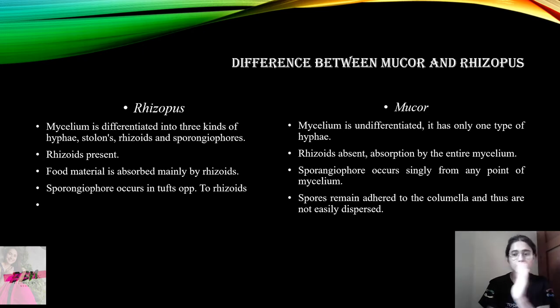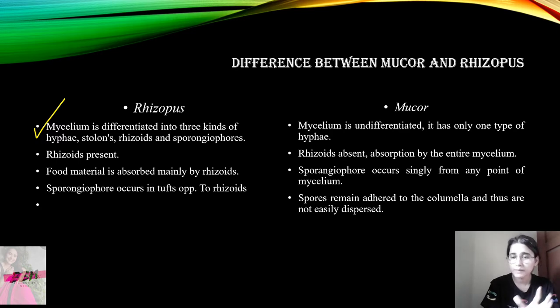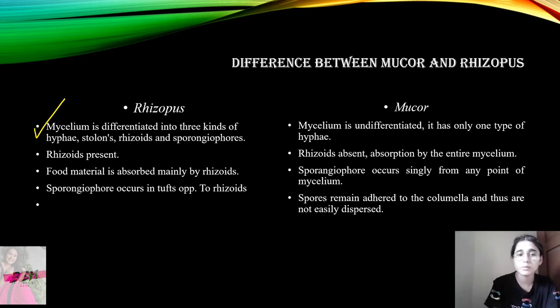We will learn what the difference is between Rhizopus and Mucor. First of all, we get to see the mycelium in Rhizopus — there are three types. We get to see three kinds of mycelium.